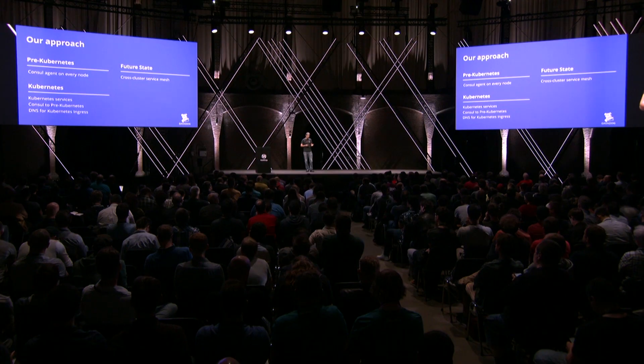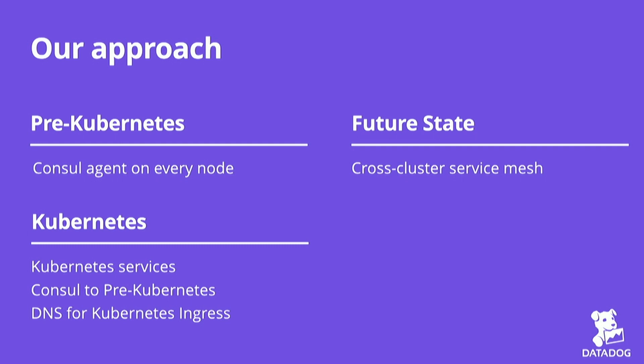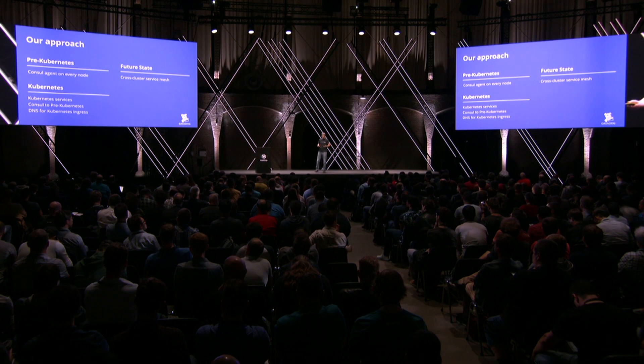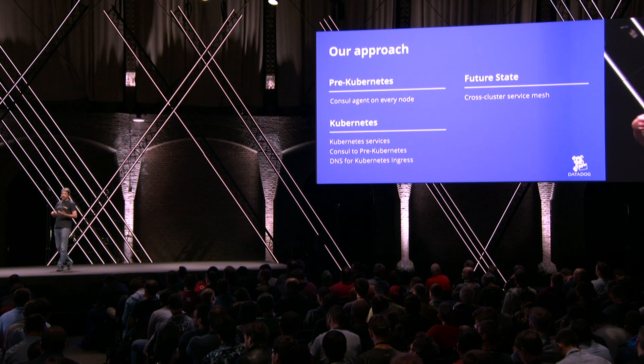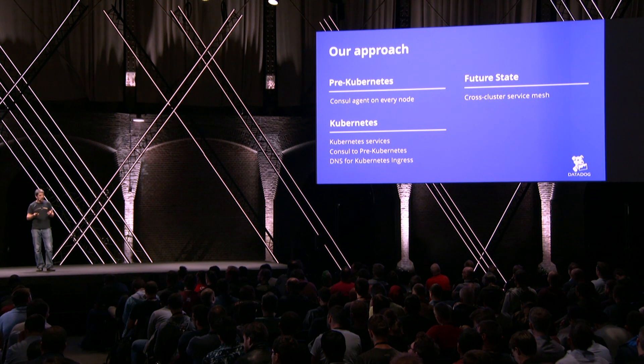Here is our approach — how we've done it in the past, how we're doing it today, and what we plan to do in the future. Before migrating to Kubernetes, we deployed a Consul agent on every node, so every service was discovering itself using Consul, and that worked pretty well even if sometimes challenging at our scale. In Kubernetes clusters, we use Kubernetes services, which is a logical and simple way to do it. We also run Consul agents inside Kubernetes and use Consul DNS to reach services running on VMs. For cluster-to-cluster and VM-to-cluster communications, we rely on ingresses and DNS — we publish services to cloud provider DNS and use that as ingress.